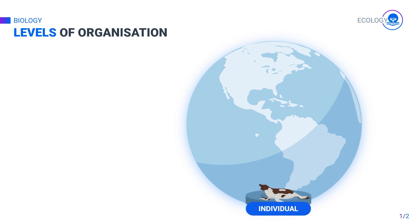An individual organism is considered the lowest level of organization. Any individual of a species that lives in an ecosystem belongs to this level. In the image, we can see a seal as an individual organism.